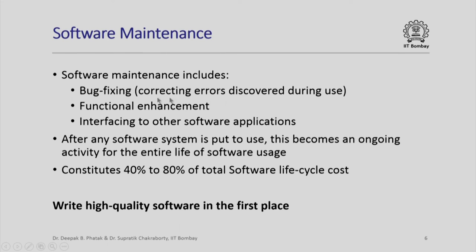This includes bug fixing — correcting errors which are discovered during use. It also includes functional enhancement. Equally importantly, a new application might come up which needs to be interfaced with your application. Even this requirement, which is not strictly a functional enhancement of the existing software but an overall enhancement through interfacing to other software applications, is also considered part of software maintenance. It is not uncommon to notice that software maintenance often constitutes 40 to 80 percent of the total software life cycle cost.